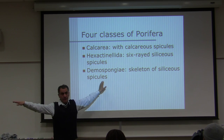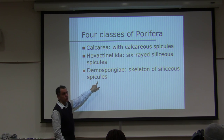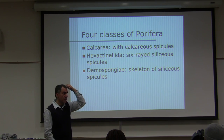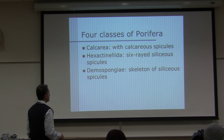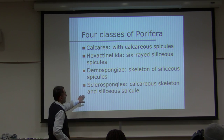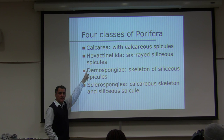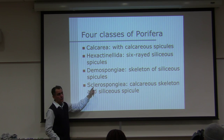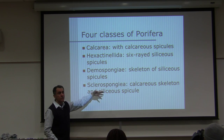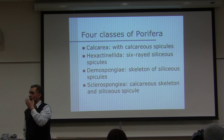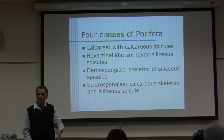Sponges are classified based on their spicules and general shape — not canal type. The three main classes are calcarea, hexactinellida, and demospongia. The fourth class, sclerospongia, some textbooks include and others don't. We do not have specimens or lecture notes for it, so don't worry about it.